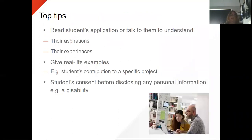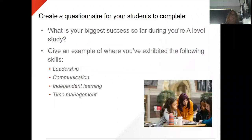Top tips: read the students' applications and talk to them first. What are their aspirations? What are their experiences? Give real-life examples, including the students' contribution to specific projects. Ensure that you've got the student's consent to disclose any personal information if they have a disability or need additional support. Only include this information if you have consent from the student.